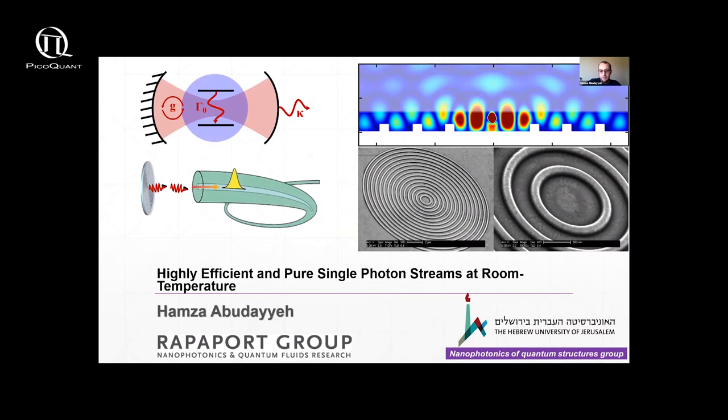So today I'll be telling you about our efforts to optimize room temperature single photon sources. The basic issue is that we imagine it's more compact, scalable, and less demanding in terms of equipment needed for a single photon source to operate. This is our vision in trying to develop these sources.